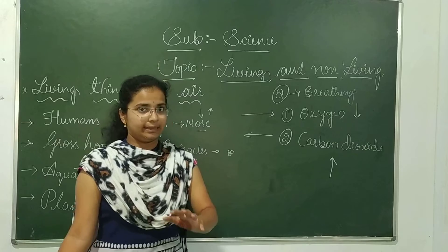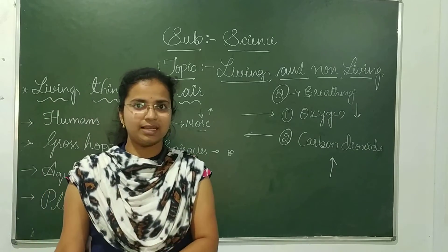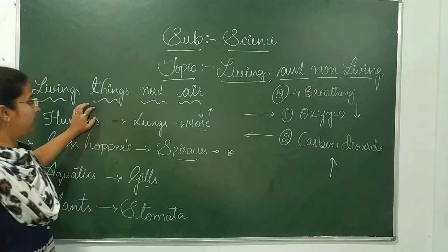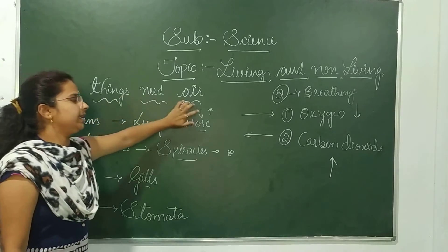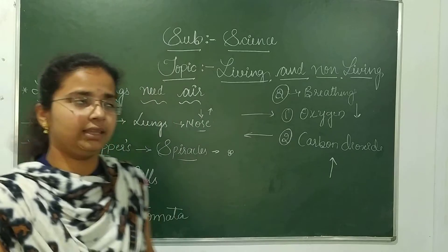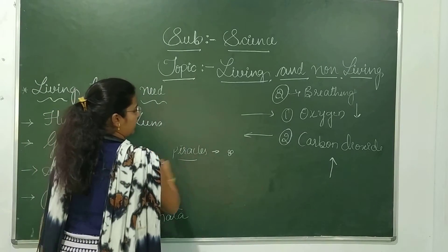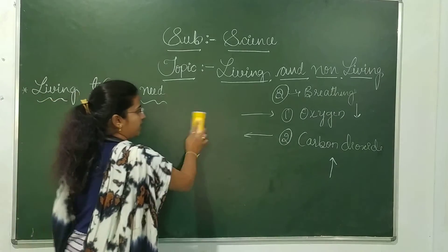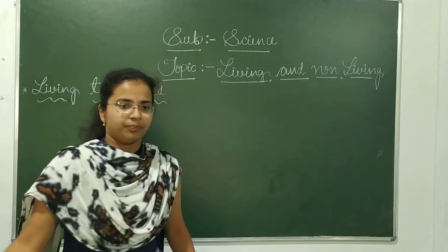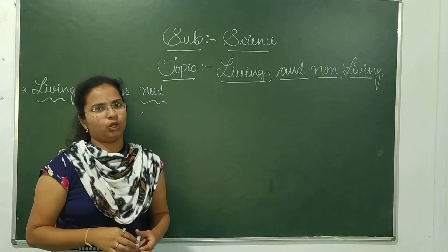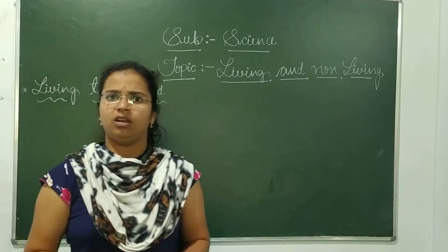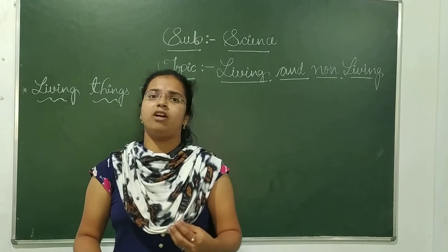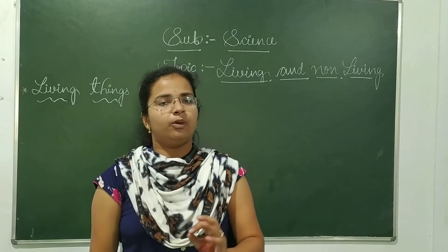We have discussed the characteristic of living things: living things need air. Now we shall discuss that living things not only need air — living things also need food and water to survive. Food gives energy to organisms. For doing work — you ask, you write, you read, you listen to class — it is because you are taking in food which gives you energy to do anything.